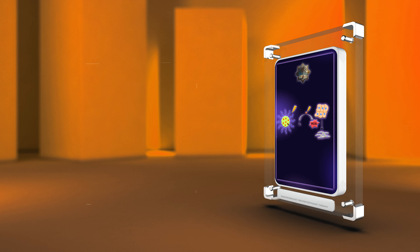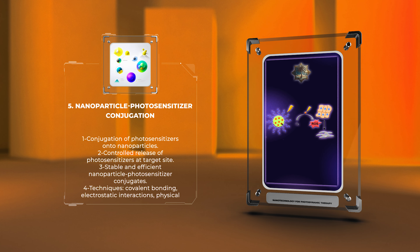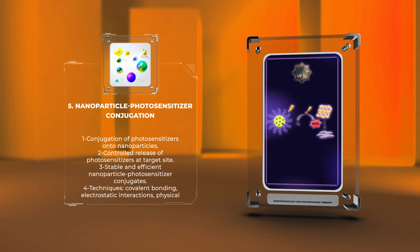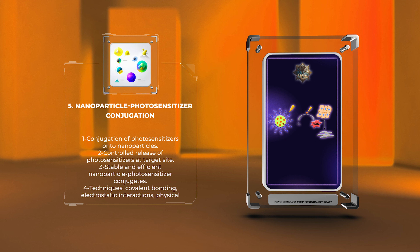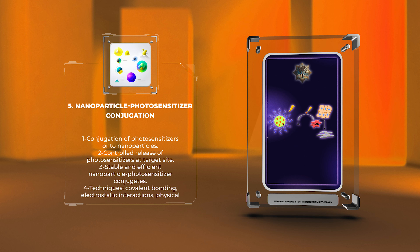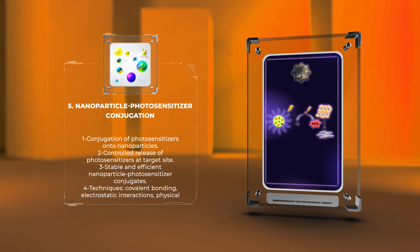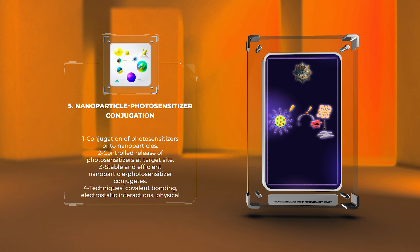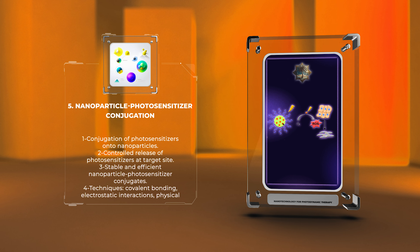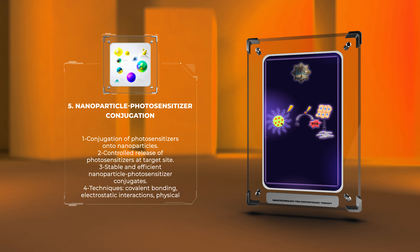To harness the advantages of both nanoparticles and photosensitizers, researchers have developed strategies to conjugate photosensitizers onto nanoparticles. This conjugation allows for controlled release of photosensitizers at the target site, improving their selectivity and reducing off-target effects. Several techniques, such as covalent bonding, electrostatic interactions, and physical encapsulation, have been employed to achieve stable and efficient nanoparticle-photosensitizer conjugates. This conjugation also facilitates imaging and tracking of the nanoparticles within the body.